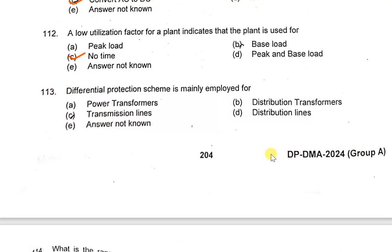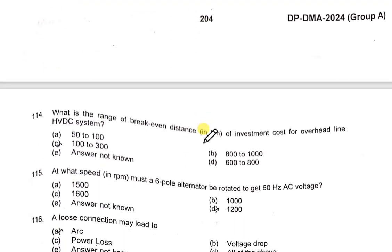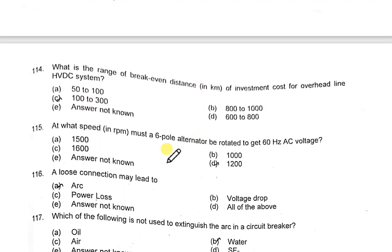Differential protection scheme is mainly employed for power transformers. For transmission lines, distance protection is used. The break-even distance for investment cost comparison between overhead line and HVDC system is around 600 to 800 km.